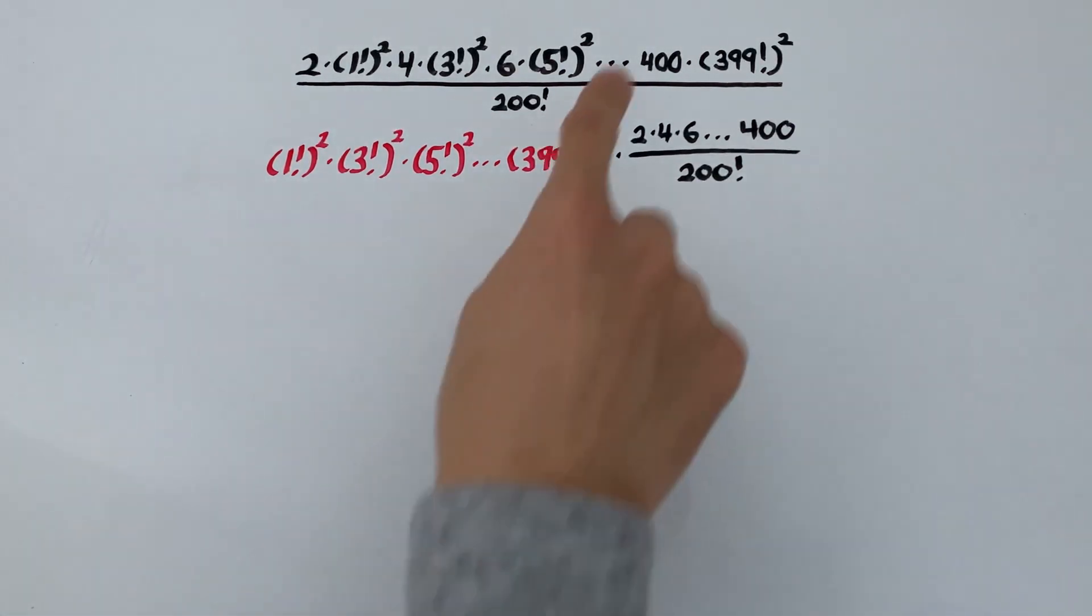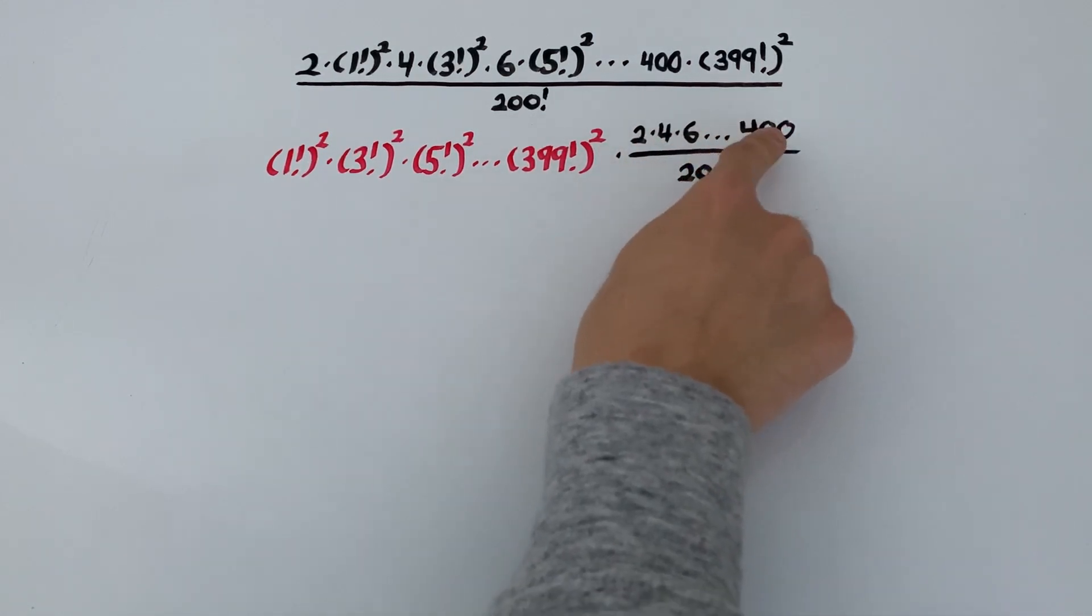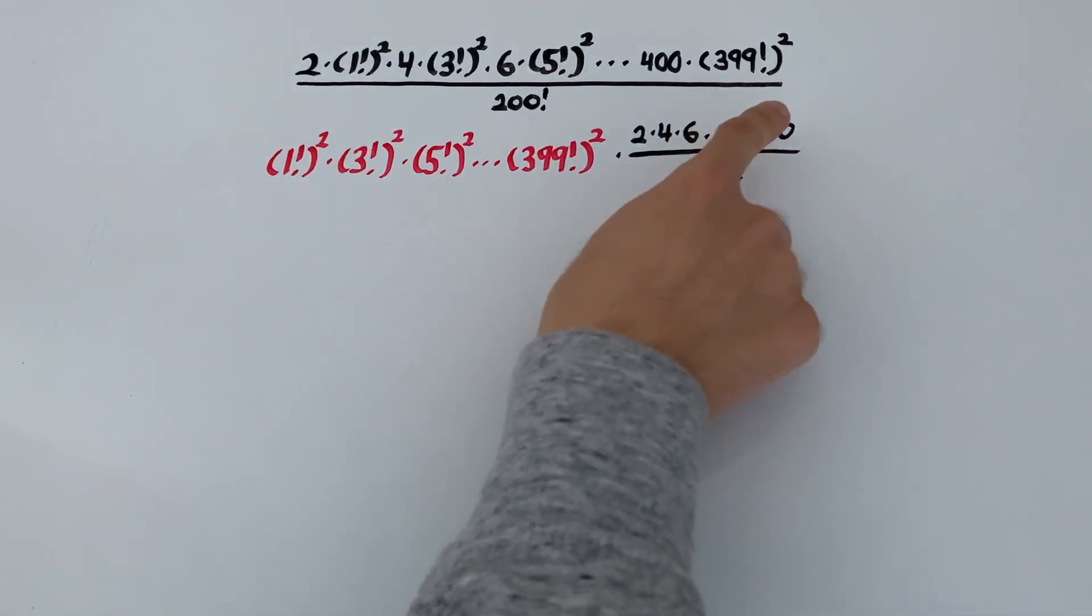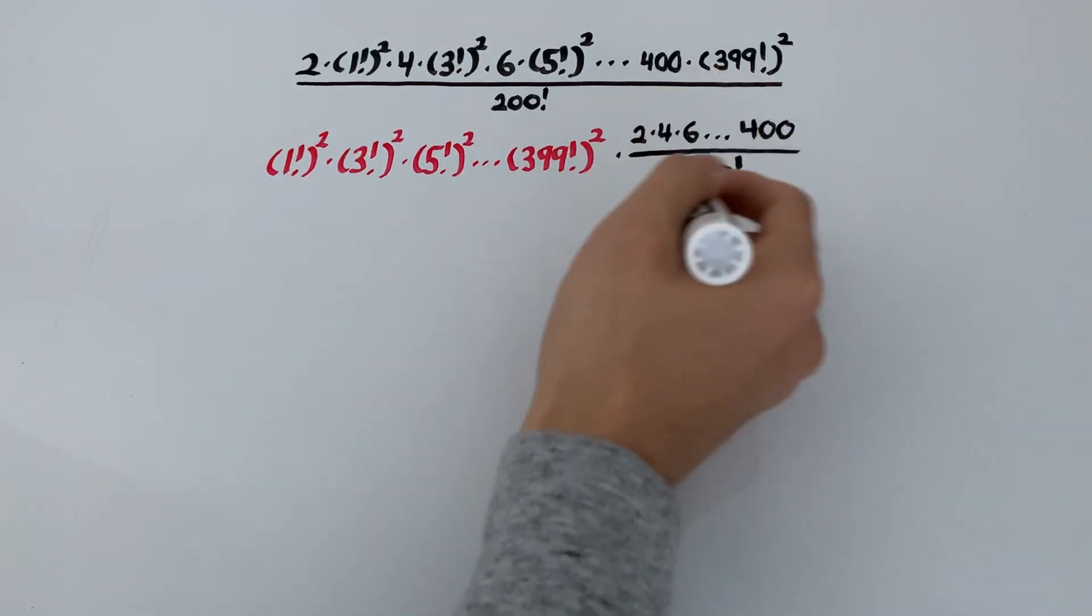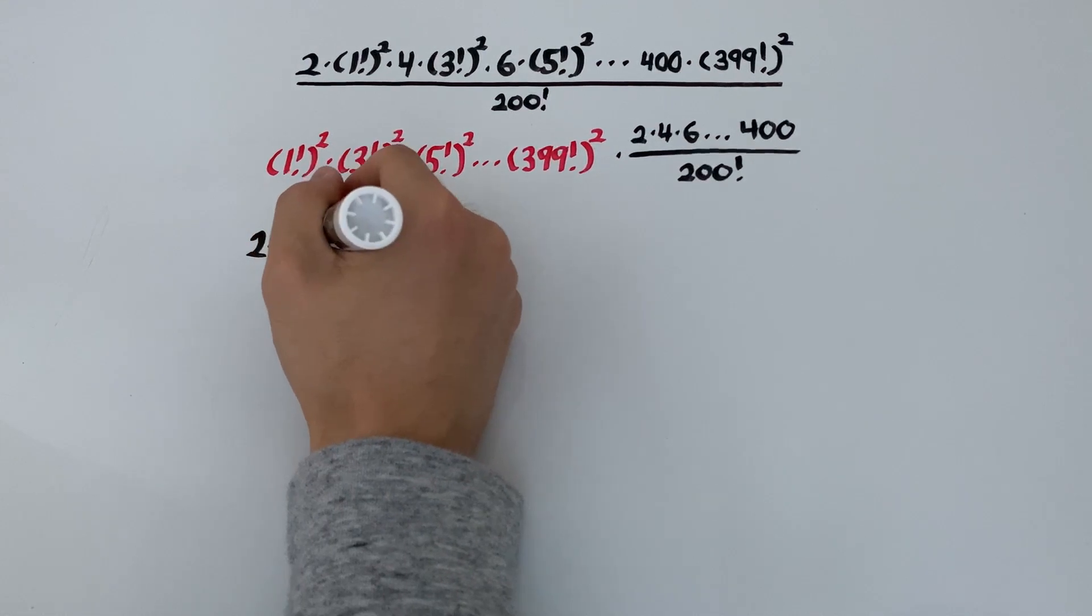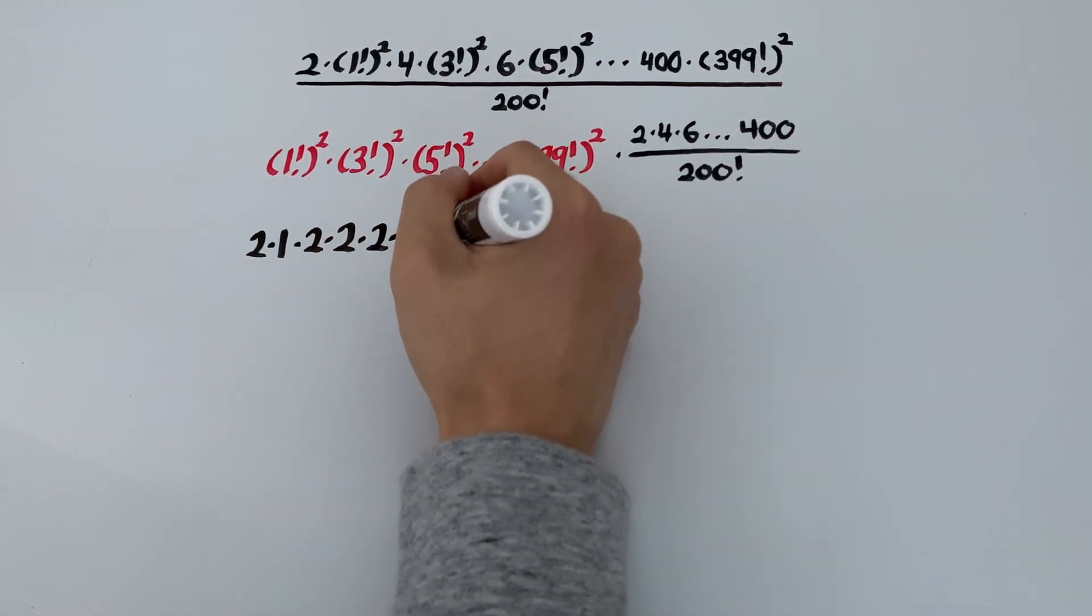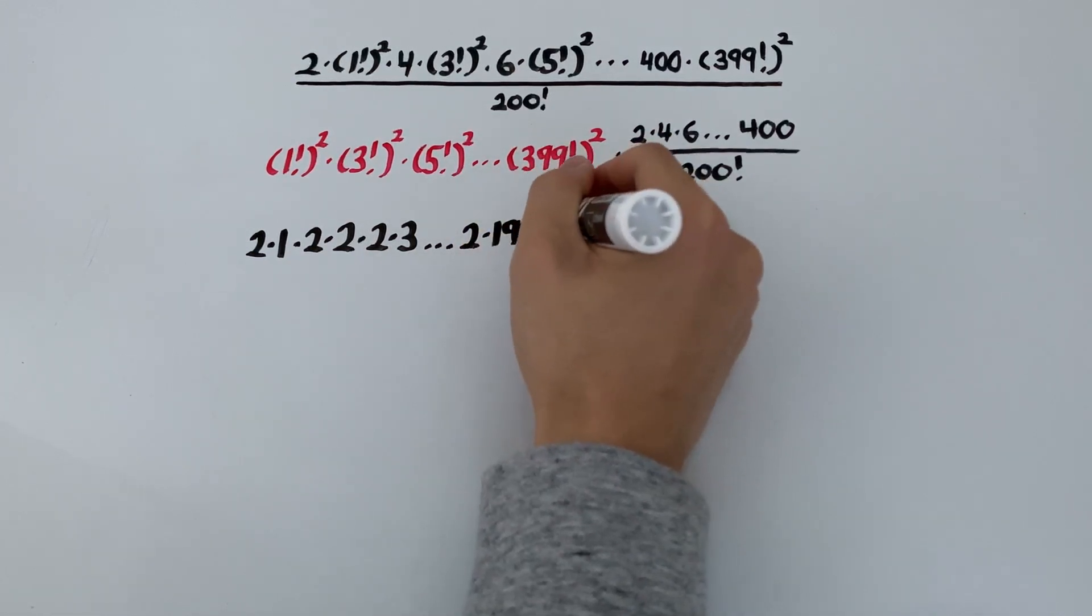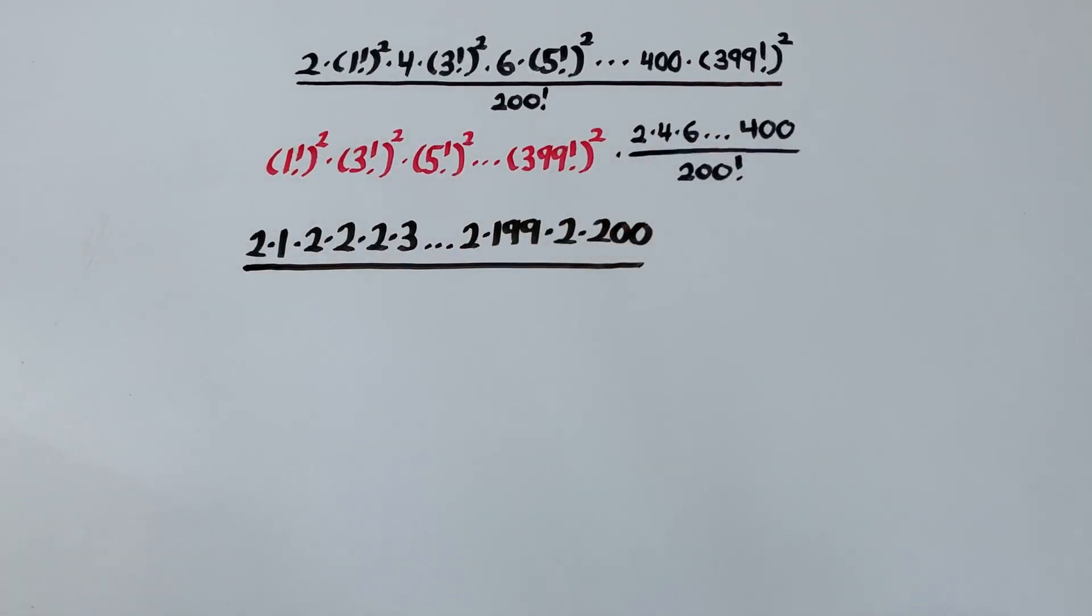Now there's something that stands out in the top part of this fraction. Notice that all of the terms 2, 4, 6, all the way to 400 are even. So they're all divisible by 2 and especially 400 is twice as large as 200. So we can rewrite this part as 2 times 1, which is 2, 2 times 2, which is 4, 2 times 3 is 6. And this continues up to 398, which is 2 times 199, and 400, which is 2 times 200. All of this divided by 200 factorial.